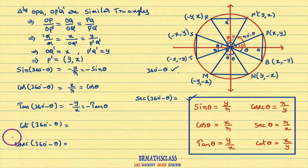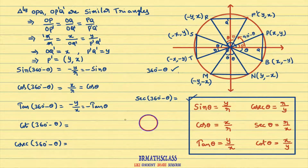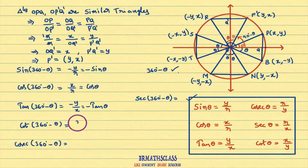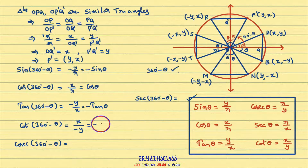Now we will see what is cot(360° − θ). Cot theta is defined as the x coordinate of the point divided by the y coordinate. Cot(360° − θ) is the x coordinate of point B divided by the y coordinate of point B. The x coordinate is x and the y coordinate is minus y, so that equals minus x by y. Since x by y is cot theta, therefore cot(360° − θ) = −cot θ.